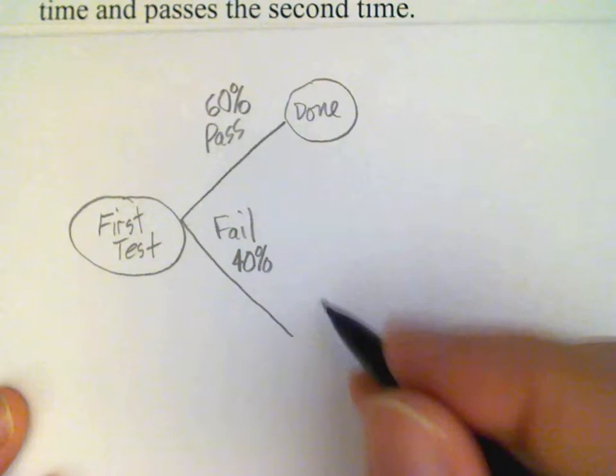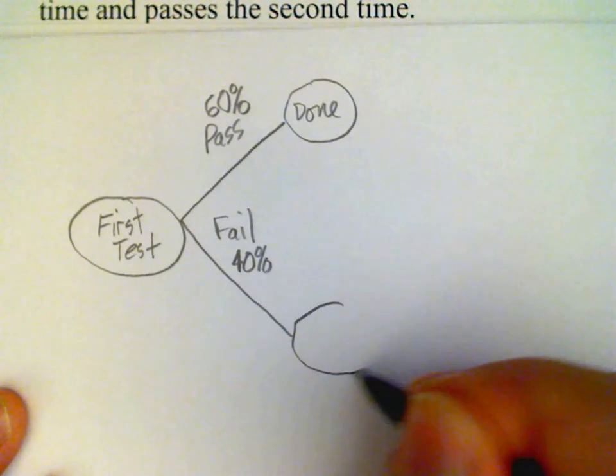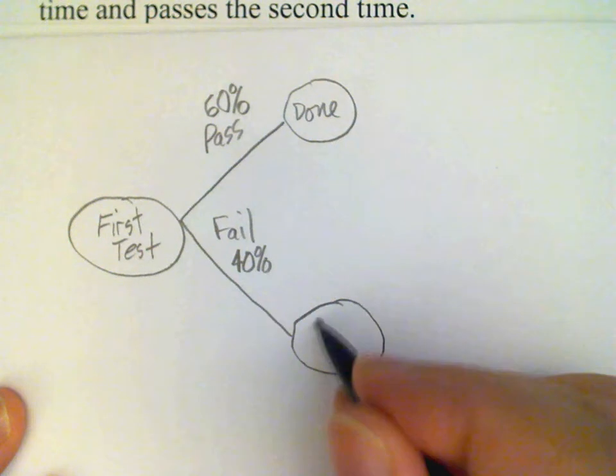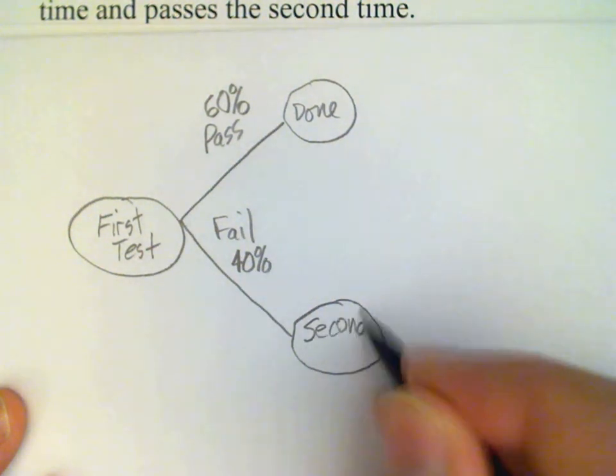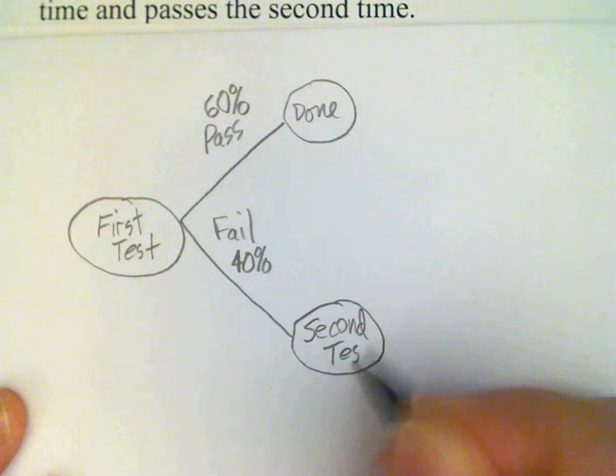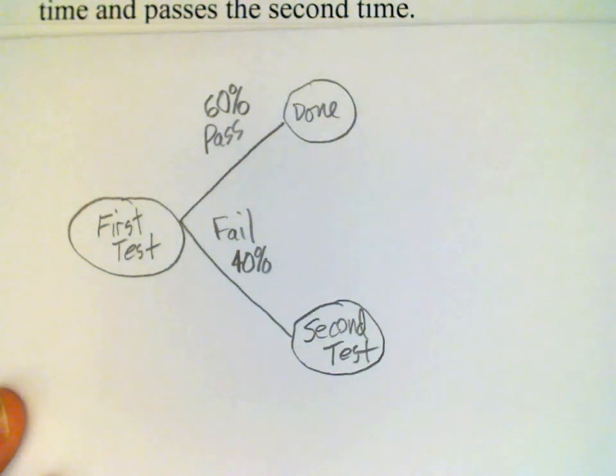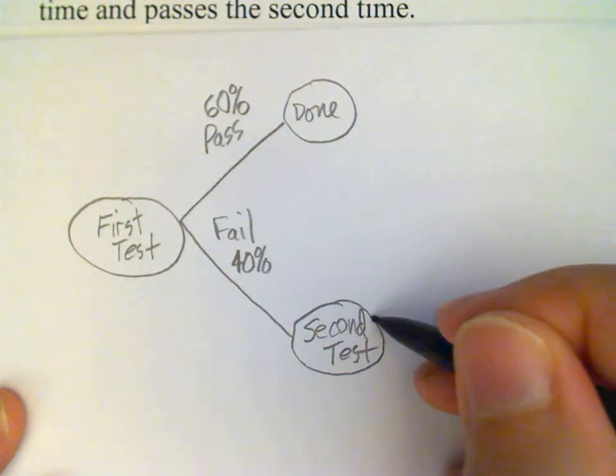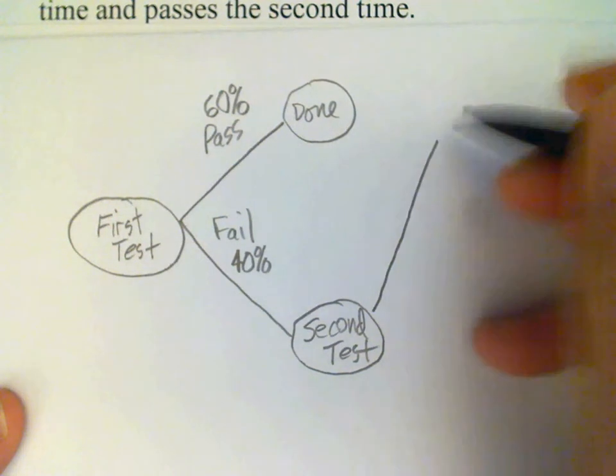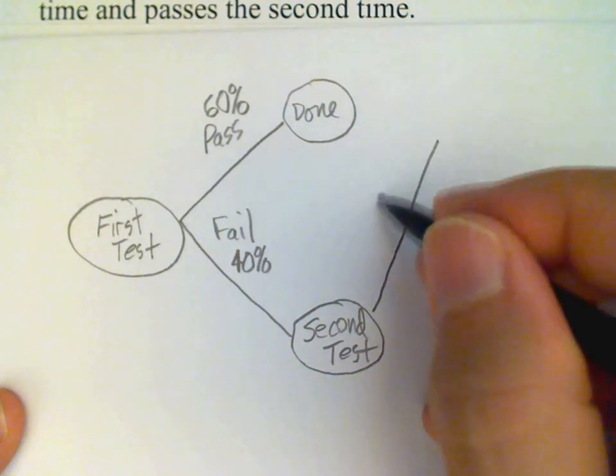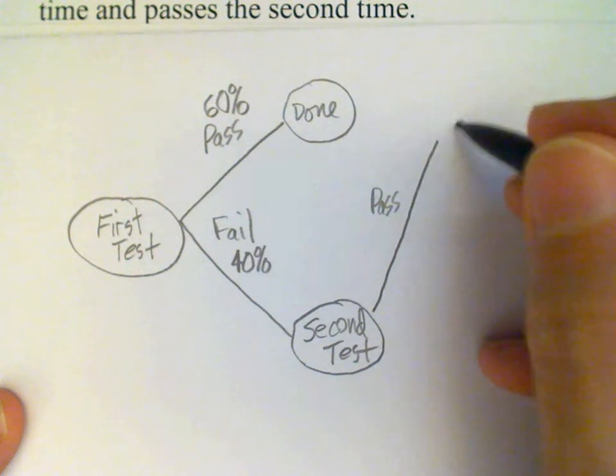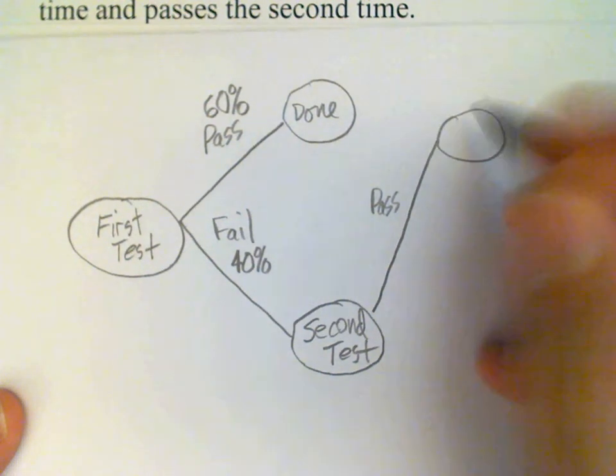So we move down our tree, and we come to the next juncture, which is the second test. Once again, there are two possibilities: candidate could pass, and in that case the candidate is done, or the candidate could fail.